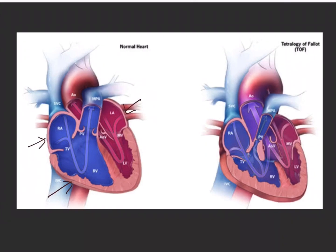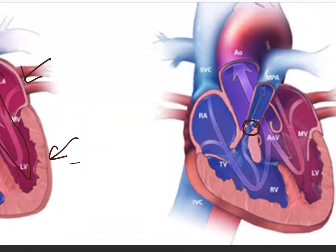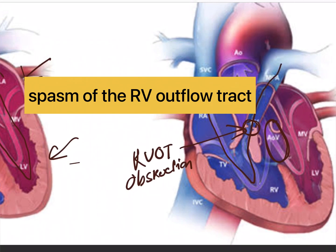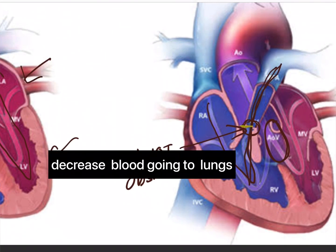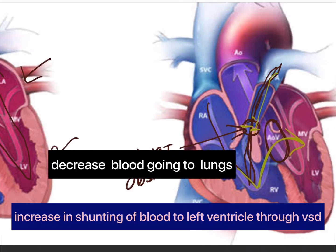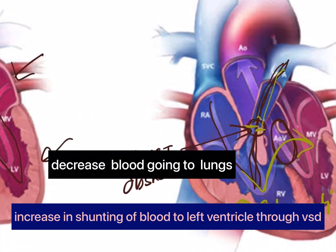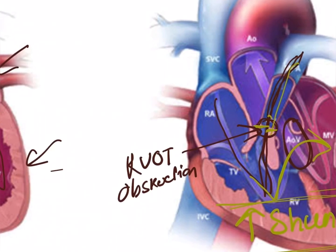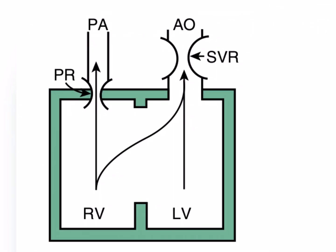Let's understand the mechanism of a tet spell. In a normal heart, blood goes from the right ventricle to the pulmonary artery and from the left ventricle to the aorta. In TOF physiology, there is right ventricular outflow tract obstruction — this is what initiates a tet spell — and there is a VSD that allows shunting of blood. Whenever there is a spasm of this outflow tract, blood to the lungs decreases, causing increasing blood to the left ventricle through the VSD, worsening cyanosis. This diagram from Park's Cardiology illustrates the RVOT stenosis leading to increased blood flow to the left ventricle.